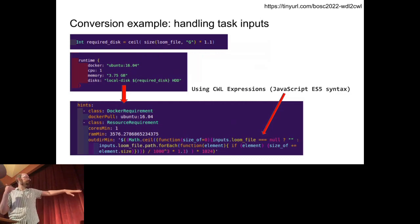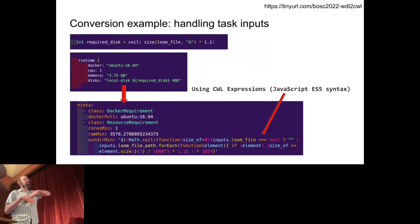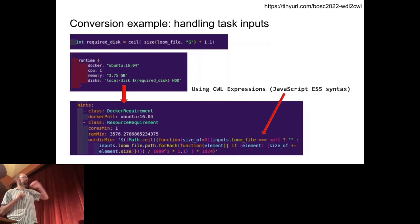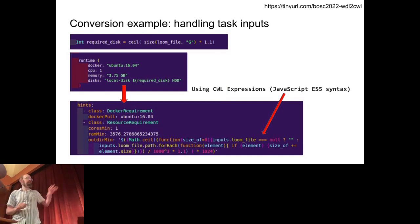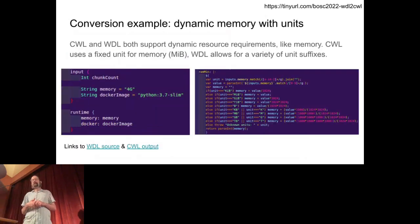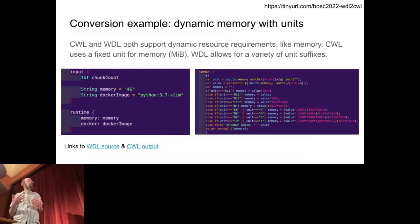This is an automated conversion. We even support the fact that WDL has many different units for memory requirements while CWL has just one, so we do the conversion for the user. We even have a JavaScript snippet for dynamic units. You don't necessarily want to read CWL that looks like this, but it means the conversion works and you can move forward.